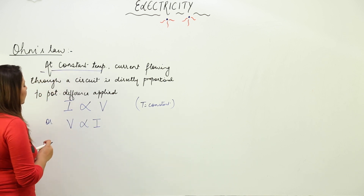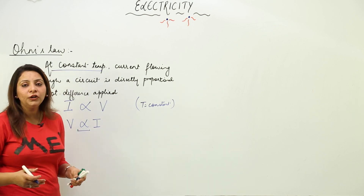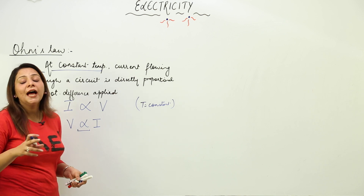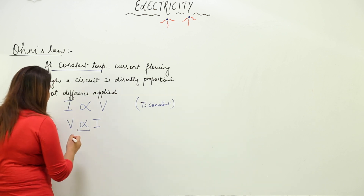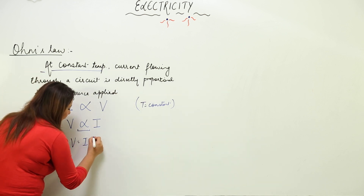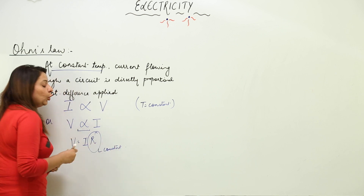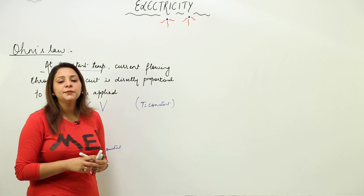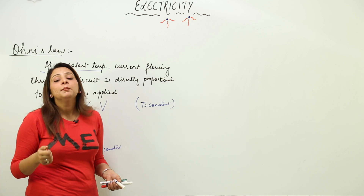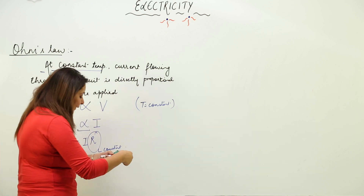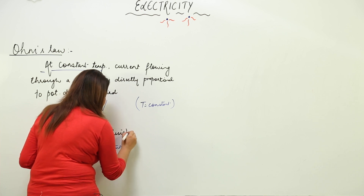We can write this as V is directly proportional to I. Removing the proportionality sign, we introduce a constant R, giving us V = IR. This constant R has a specific name — it is called resistance. Unlike some constants that are simply called proportionality constants, this one has a definite physical meaning.